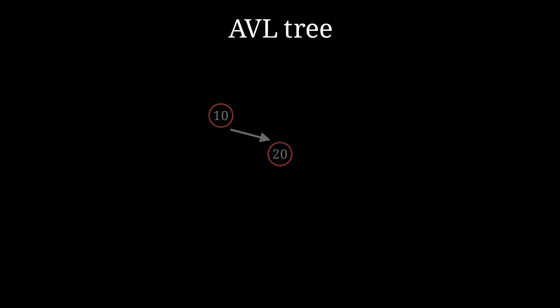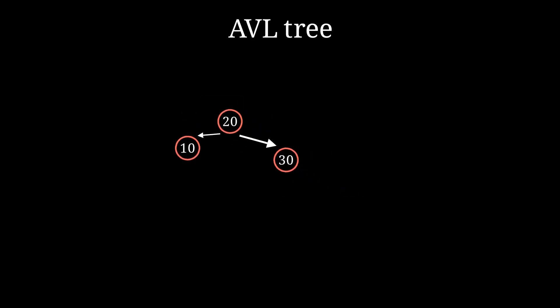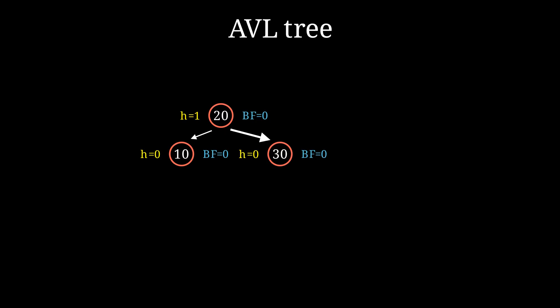Let's start with a simple tree with just two nodes, 10 and 20. Now, if we insert 30, the tree becomes unbalanced. We can calculate the heights and balance factors for each node. As you can see, the balance factor of the root is minus 2, which is less than minus 1. To fix this imbalance, we need to perform a rotation. After the rotation, the balance factors are now all between minus 1 and 1. The rotation performed is called a left-left rotation.